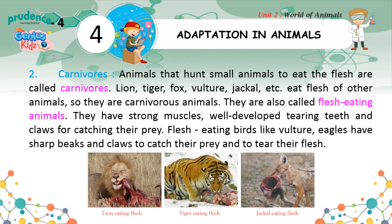Carnivores. Animals that hunt small animals to eat the flesh are called carnivores. Lion, tiger, fox, vulture, jackal, etc. eat flesh of other animals, so they are carnivorous animals, also called flesh-eating animals. They have strong muscles, well-developed tearing teeth and claws for catching their prey. Flesh-eating birds like vultures and eagles have sharp beaks and claws to catch their prey and to tear their flesh.